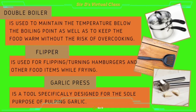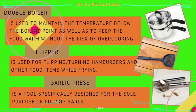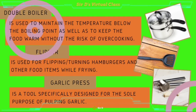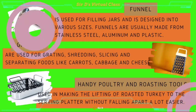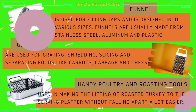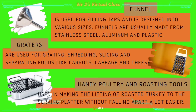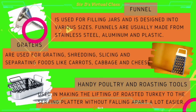Flipper is used for flipping and turning hamburgers and other food items while frying. Garlic press is a tool specifically designed for the sole purpose of pulping garlic. Funnel is used for filling jars and is designed in various sizes. Funnels are usually made from stainless steel, aluminum, and plastic.